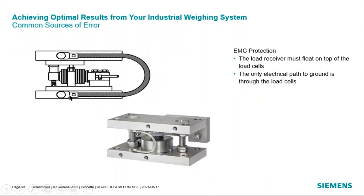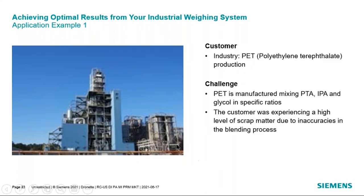You also want to protect the load cell from electrical noise. Because the vessel is floating on top of the load cells, the only path to ground from the bin is through the load cell — so you want a grounding cable. Also, if static electricity were to build up in or on the silo, the only path to discharge would be through the load cells, which could damage them. Mounting units typically come with a grounding cable to address this.